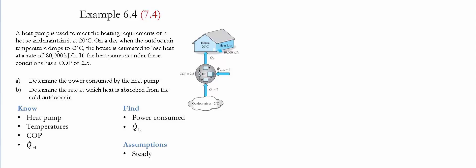A heat pump is used to meet the heating requirements of a house and maintain it at 20 Celsius. On a day when the outdoor air temperature drops to negative 2 Celsius, the house is estimated to lose heat at a rate of 80,000 kJ per hour. If the heat pump under these conditions has a coefficient of performance of 2.5.